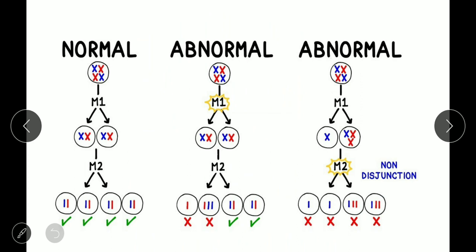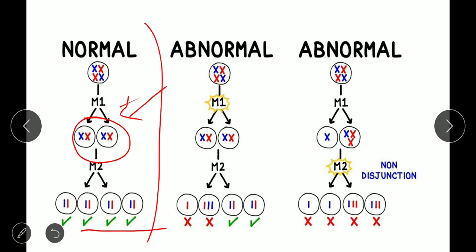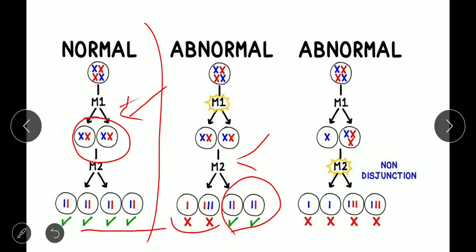In normal cell division, the chromosomes get separated resulting in two cells with equal chromosome numbers. The daughter cells have an equal number of chromosomes — this is the normal condition. In the abnormal condition — non-disjunction — one cell has extra chromosomes and one cell has fewer chromosomes. So two daughter cells have normal chromosomes and two daughter cells have an abnormal number of chromosomes due to non-disjunction.